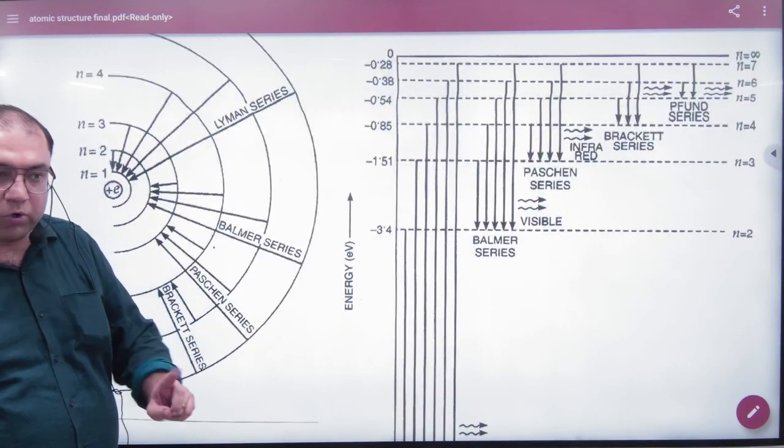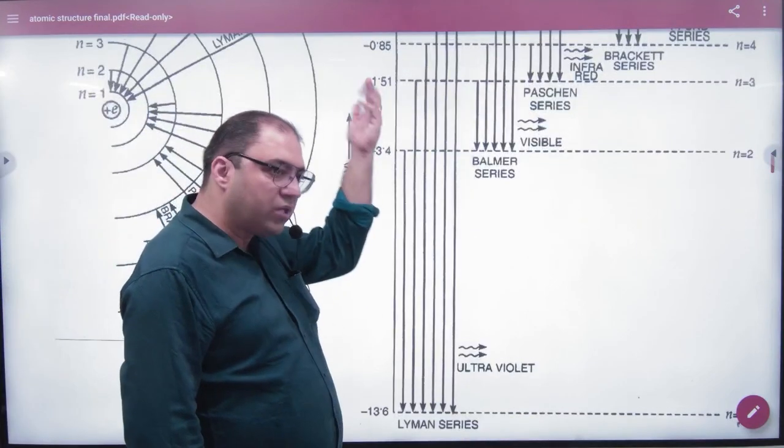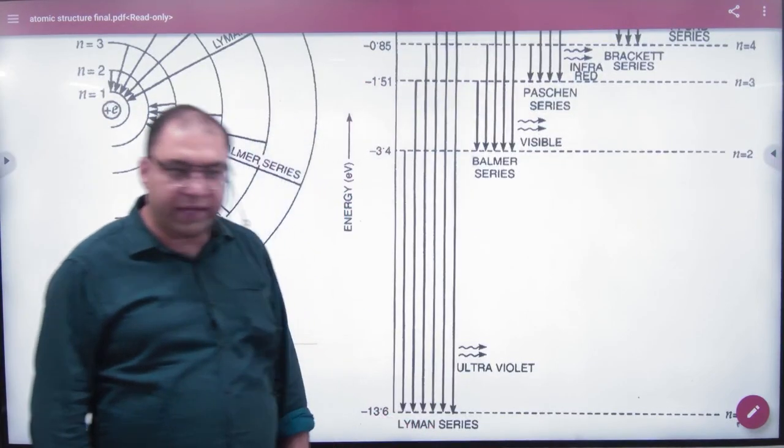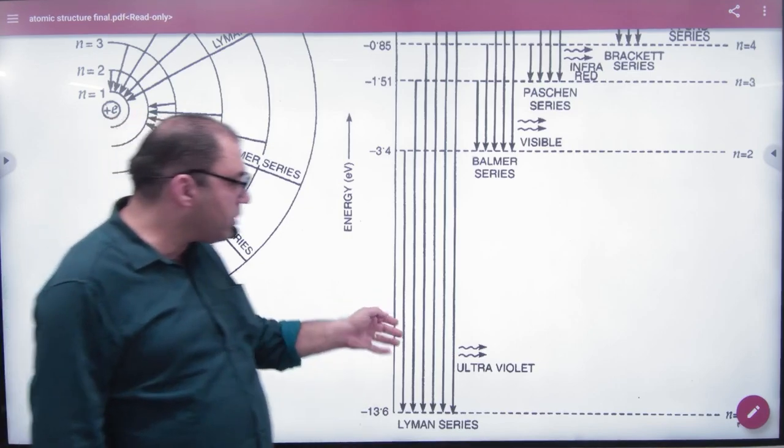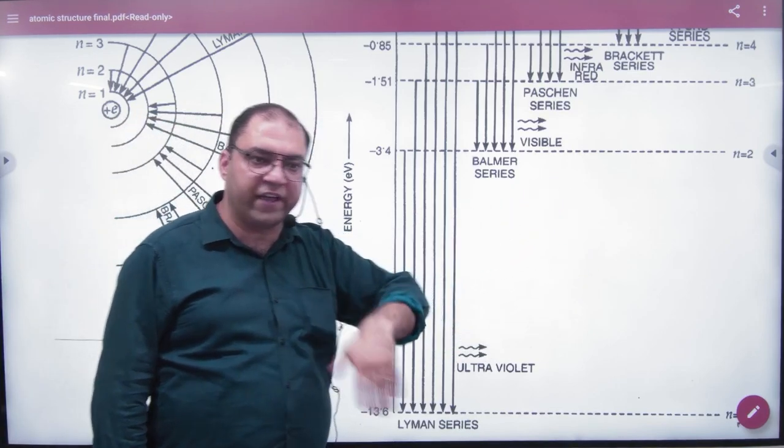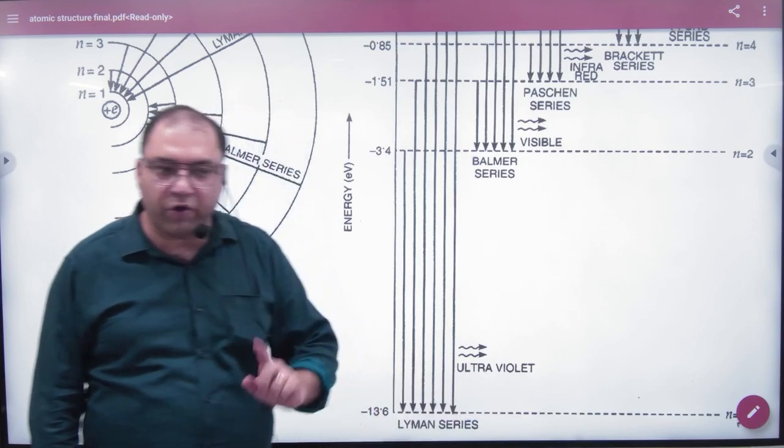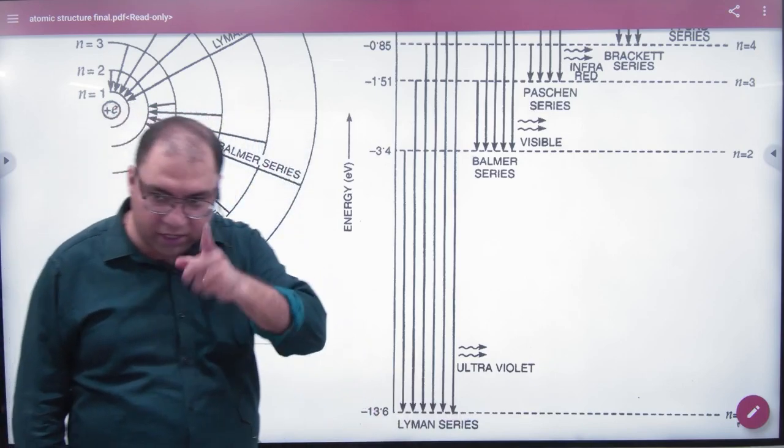If the transition is down to n equals 1, the Lyman series, then the waves correspond to the ultraviolet. What is the ultraviolet?